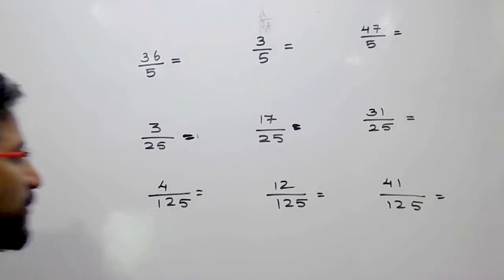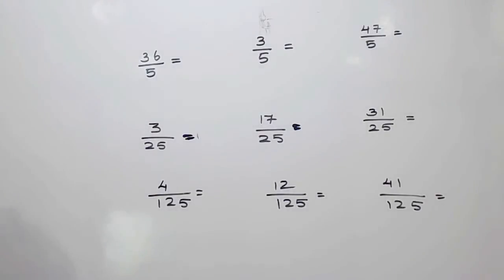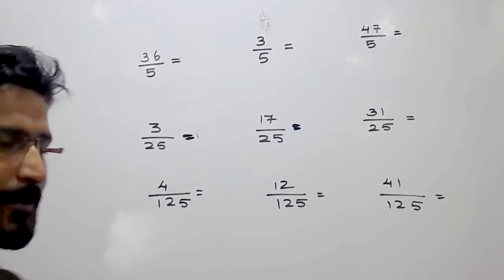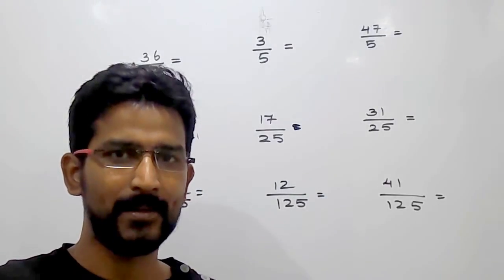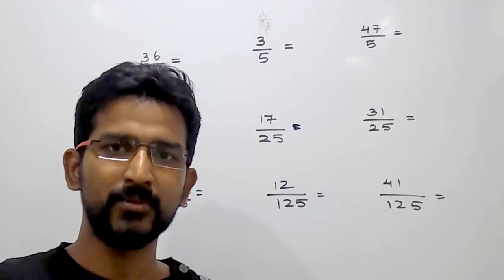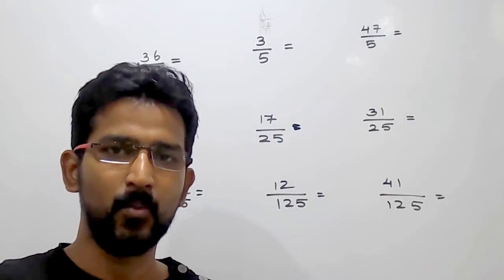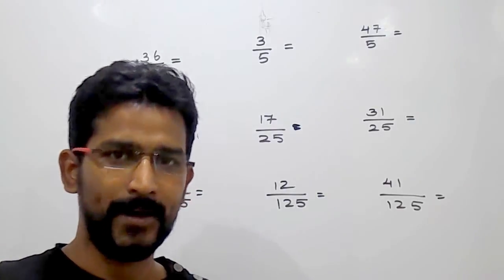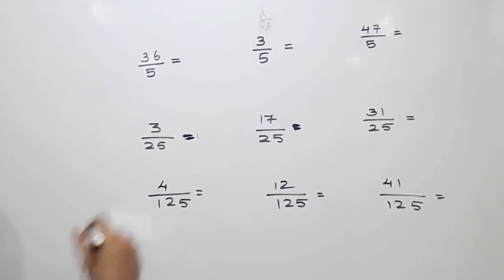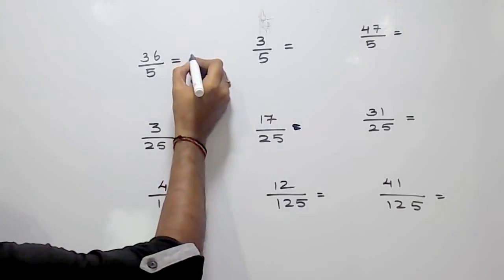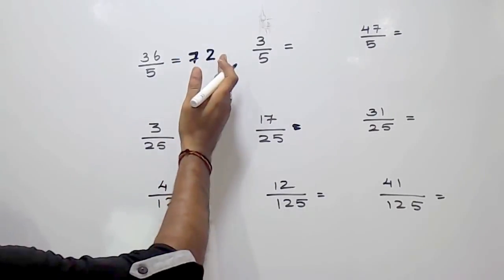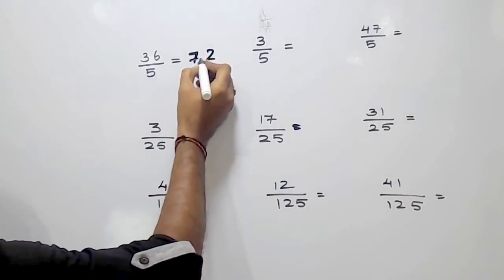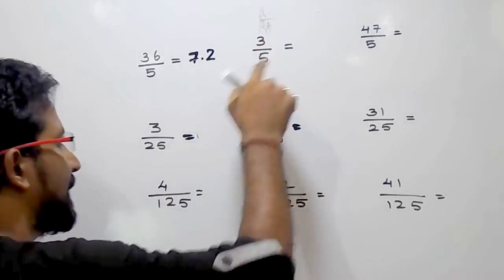For example, you want to divide 36 by 5. Whenever you have to divide any number by 5, what you have to do is just multiply that number by 2 and put the decimal point after one number from the rightmost digit. So 36 divided by 5: multiply 36 by 2, which gives 72. Put the decimal point after one number from the right, so it will be 7.2.